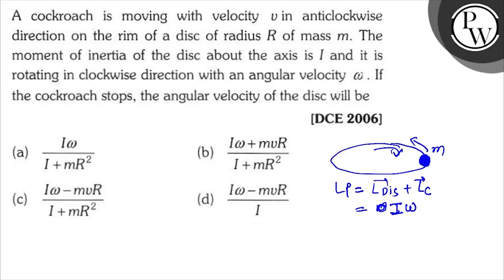Your cockroach is moving anticlockwise, radius R, velocity v. And this is with respect to ground. I'll write this as m v R, where R is the radius, capital R.